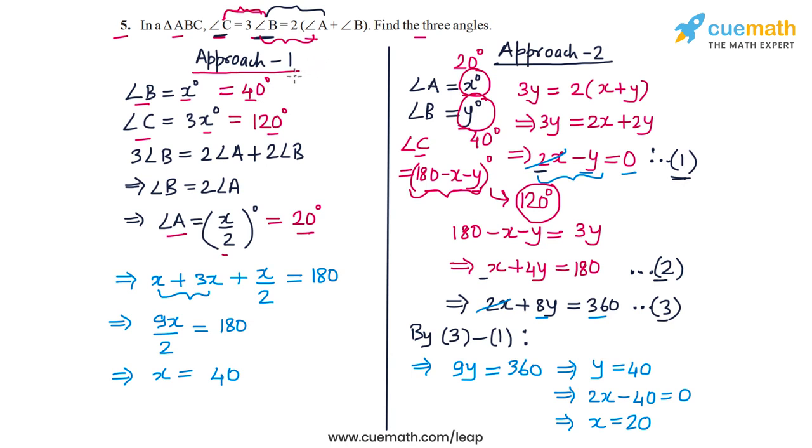The only difference is that in approach one, we set up the equations in a single variable. And in approach two, we assumed two variables. But essentially we did the same thing. So the answer is that the three angles are 20 degrees, 40 degrees, and 120 degrees.